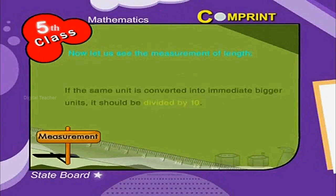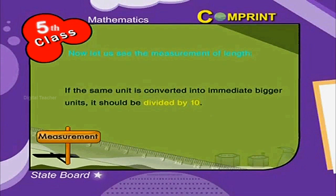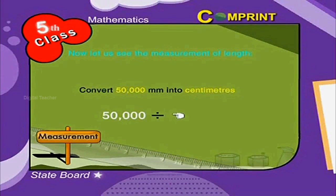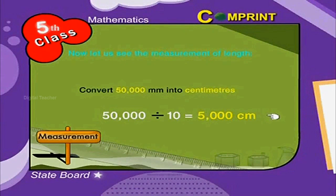If a unit is converted into the immediate bigger unit, it should be divided by ten. For example, convert fifty thousand millimeters into centimeters. This can be written as: fifty thousand divided by ten is equal to five thousand centimeters.